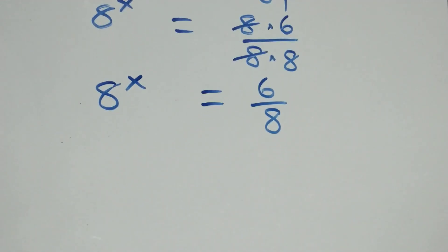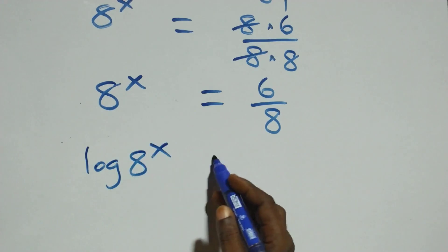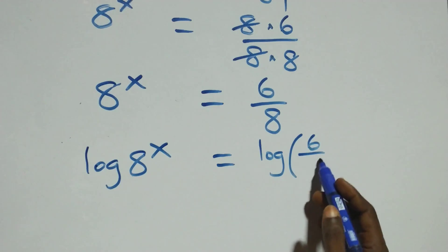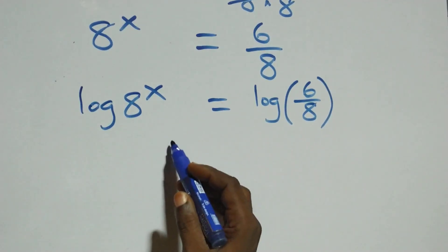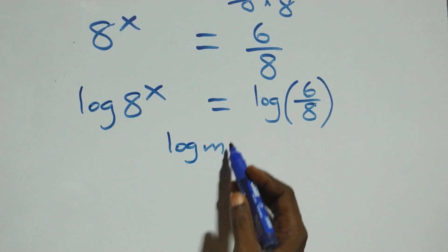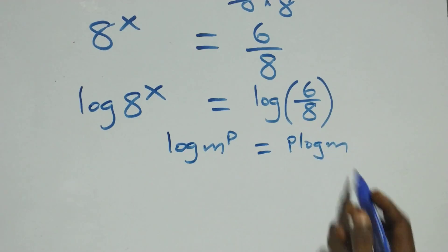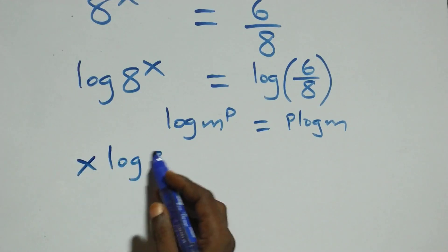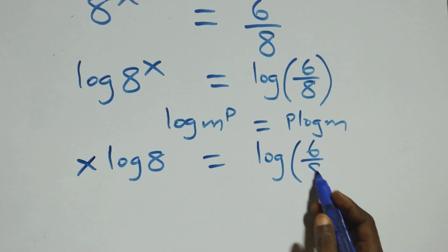Our next step: we take the log on both sides. So we have log 8 raised to power x equals log 6 over 8. We apply the power rule of logarithms: when we have log m raised to power p, this is the same thing as p times log m. That is, we have x log 8 equals log 6 over 8.